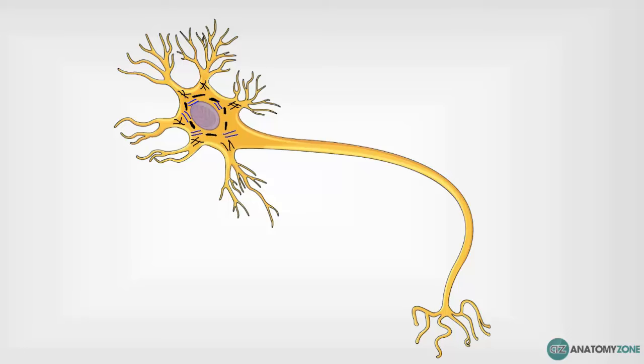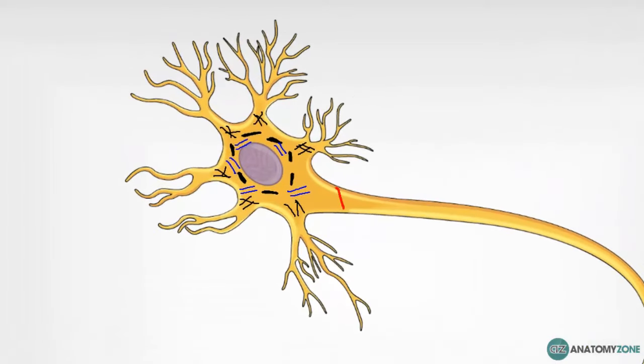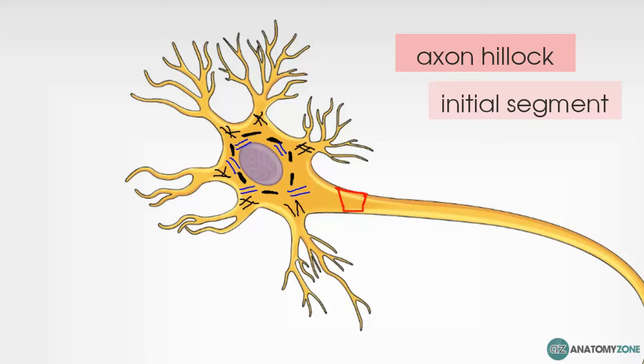Where the cell body tapers to become the axon, this is known as the axon hillock. This is where the axon emerges from the cell body and it's the initial part of the axon, so it's also referred to as the initial segment. At this point of the axon hillock, the cytoplasm is then referred to as axoplasm.